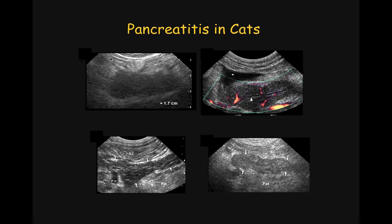On the top left, we see a thickened hypoechoic pancreas surrounded by bright fat, just like what we see in dogs. Similarly, on the top right, we see an enlarged hypoechoic pancreas surrounded by hyperechoic fat. We also have the presence of a small amount of anechoic effusion, and power angio was performed to recognize the difference between flow within the vessel and the lack of flow within this prominent pancreatic duct. A prominent pancreatic duct can be seen in pancreatitis, but it can also be seen in normal cats, especially if they are old.